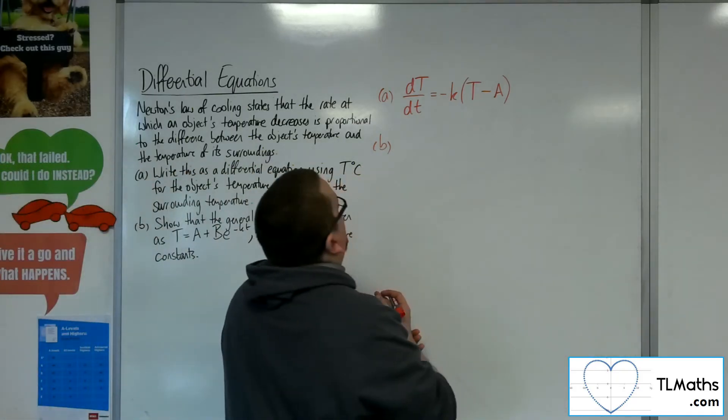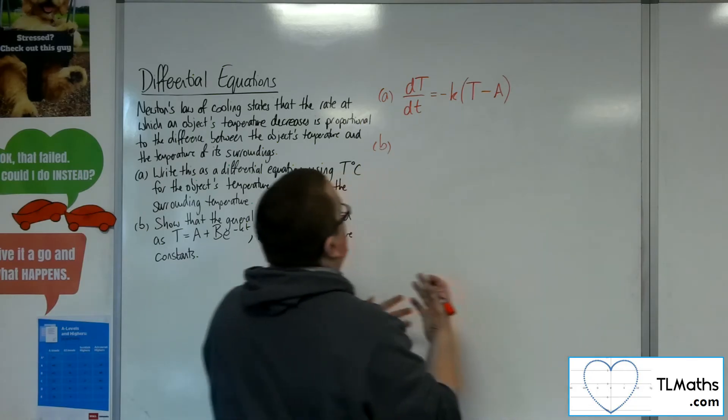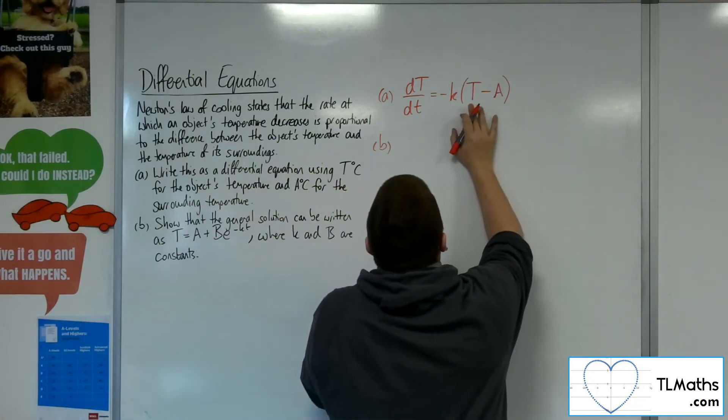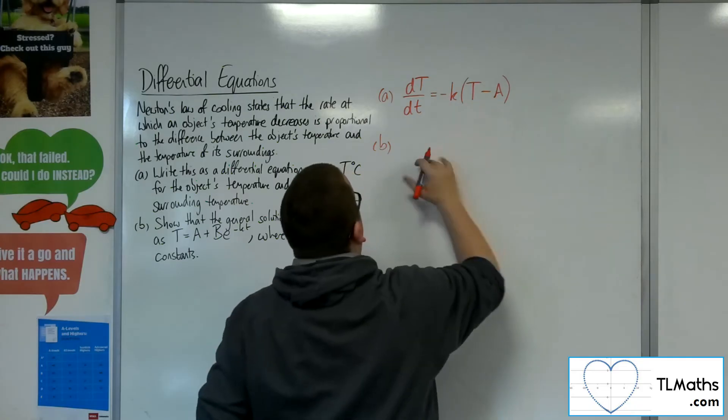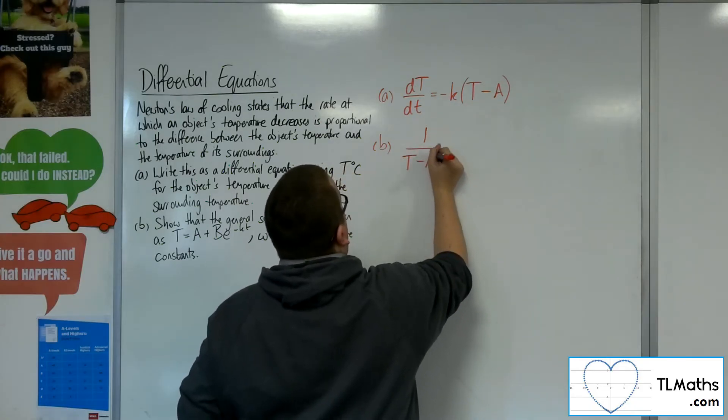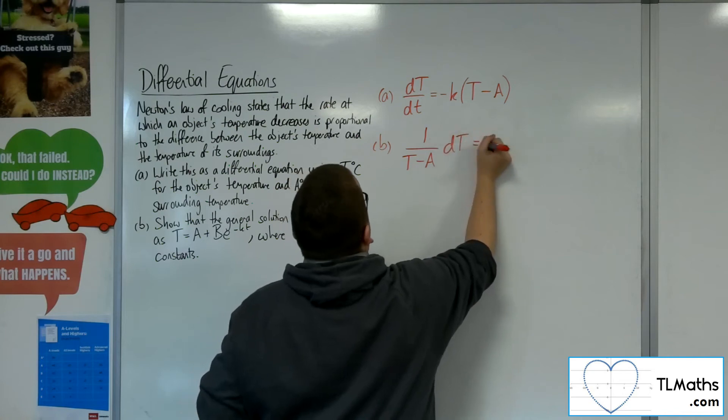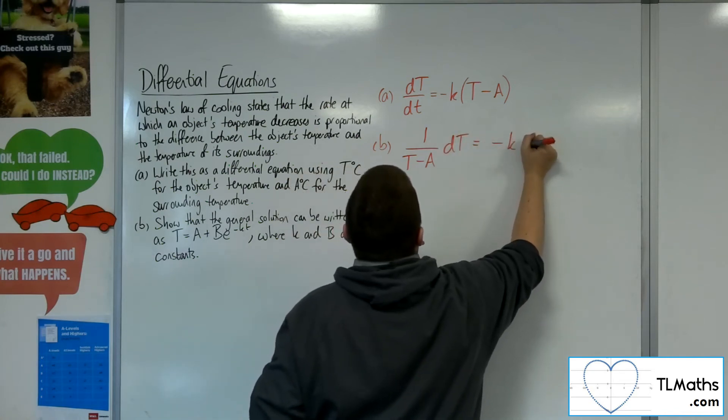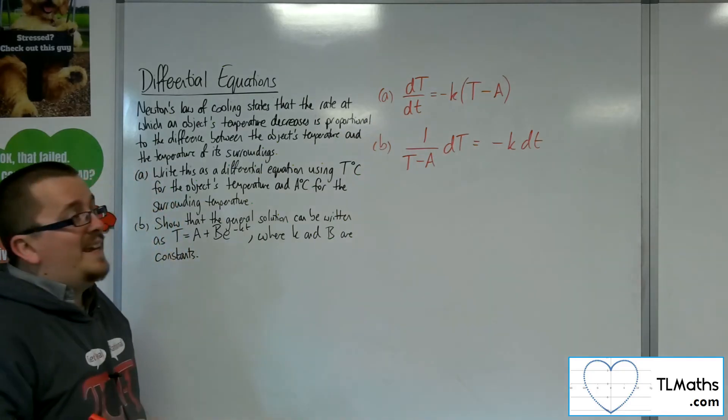Well, I need to get the capital T to the left-hand side. Now, there's that T minus A, and we have to take the whole bit of the T minus A, dividing through, in order to get that capital T on the left-hand side. The minus K can be left there with multiplying both sides by the dt.